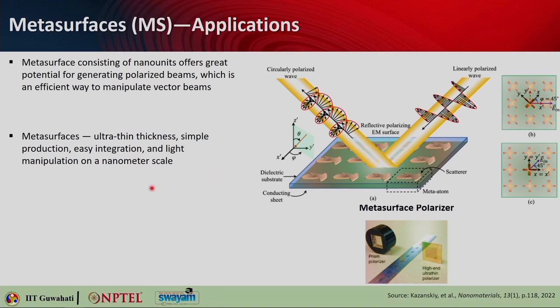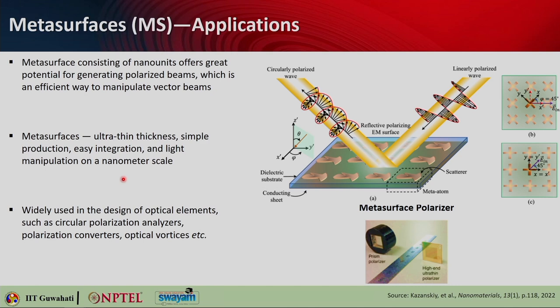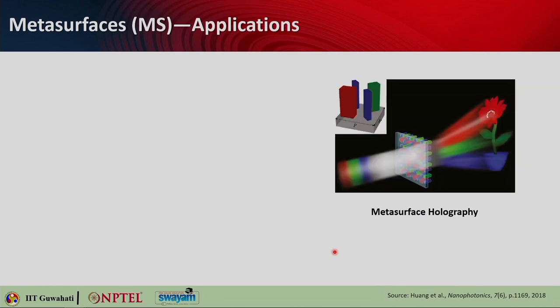Metasurfaces are ultra-thin, easy to fabricate, easy to integrate, and allow manipulation of light on the nanometer scale. They are widely used in the design of optical components such as circular polarizers, circular polarization analyzers, polarization converters, and optical vortices. One can think of all bulk optical components being replaced by these flat optical components.